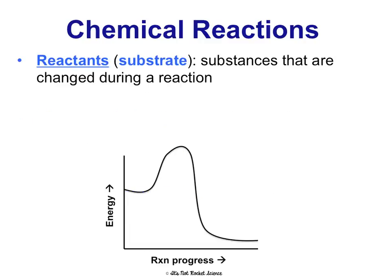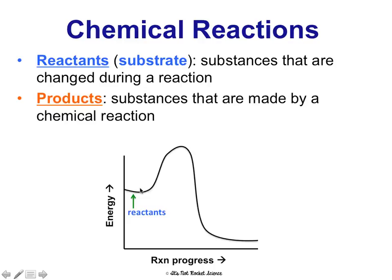Chemical reactions have reactants and products. Reactants are also known as substrates — these words are used interchangeably. These are the substances being changed during a chemical reaction; they're like the ingredients, what you start with. In an energy diagram, the reactant energy is what we see on the left side. Products are the substances being made by the chemical reaction, what we see at the end. We always start with reactants or substrates and end with products.